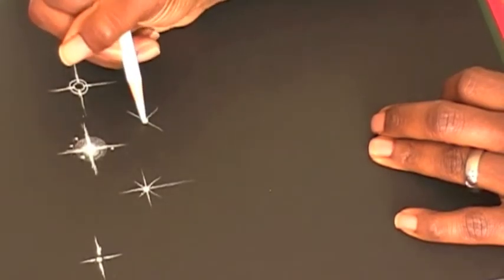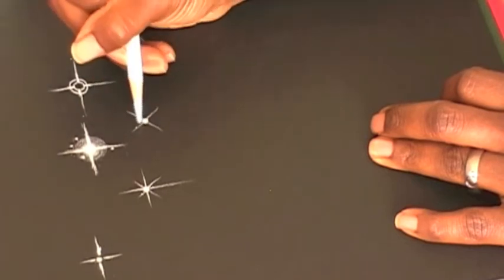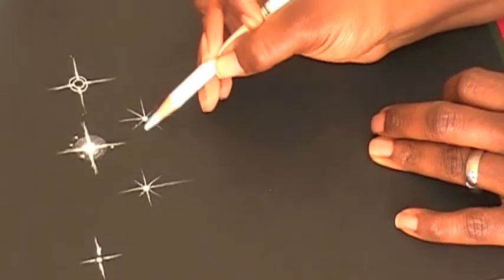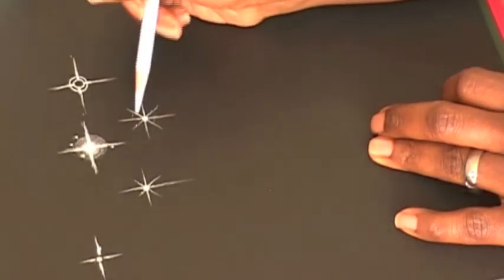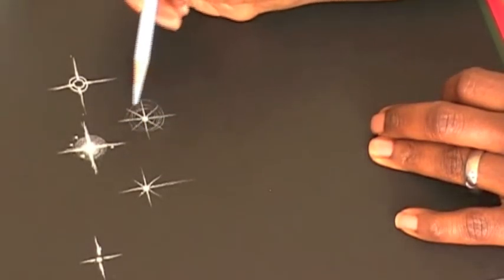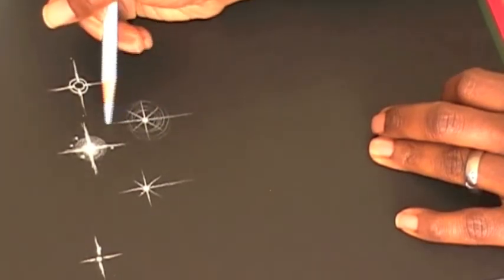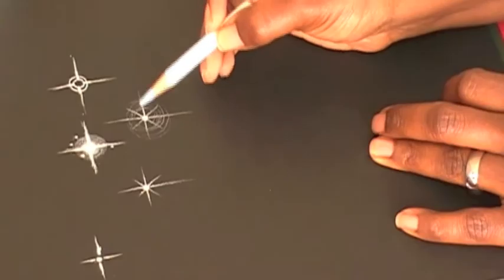So I'm drawing the same star technique here with the diagonal lines and then the other lines coming out. But on this one, I'm doing a kind of spiraling line around it so it looks like it's glowing a little bit more. A little bit more depth to the star.